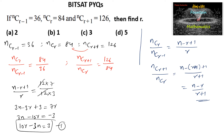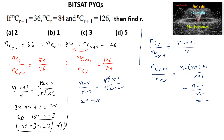For the second ratio, N_C_(R+1) upon N_C_R gives (N - R) / (R + 1) = 126/84, simplified as 42×3 over 42×2. Cross-multiplying: 2N - 2R = 3R + 3, so 2N - 5R = 3.